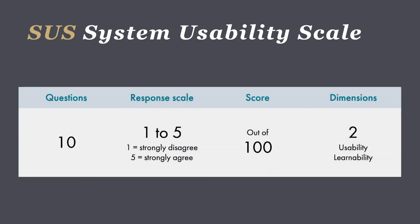The System Usability Scale is based on 10 statements that participants judge on the Likert scale of strongly disagree to strongly agree. The technique yields a single score result on a scale of 0 to 100 and can measure the usability and the learnability of a system or product.